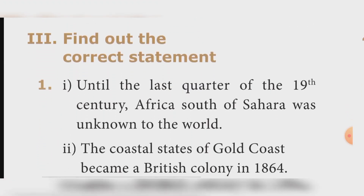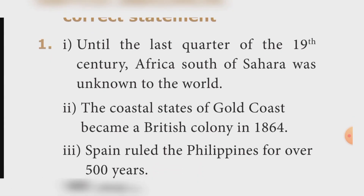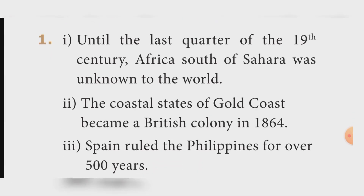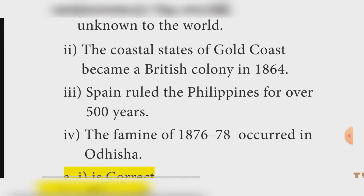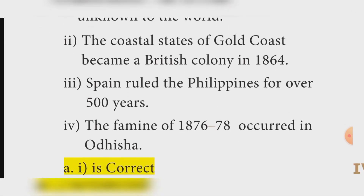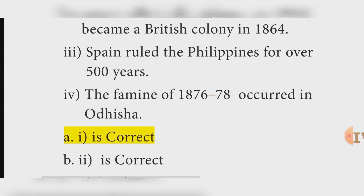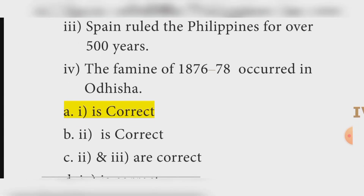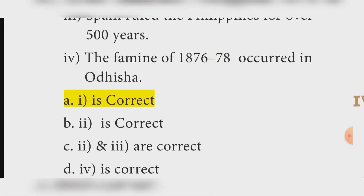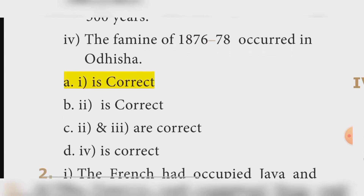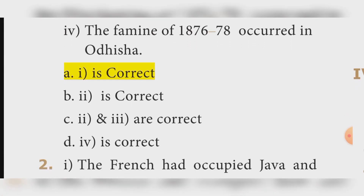Third section: Find out the correct statement. Statement one — Until the last quarter of the 19th century, Africa south of the Sahara was unknown to the world. Statement two — The coastal states of Gold Coast became a British colony in 1864. Statement three — Spain ruled the Philippines for over 500 years. Statement four — The famine of 1876 to 1878 occurred in Odisha. Answer: Option A — Statement one is correct.